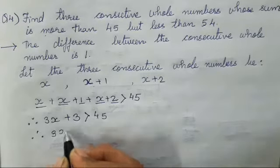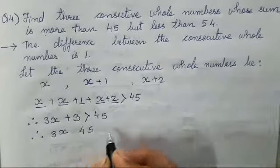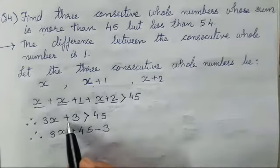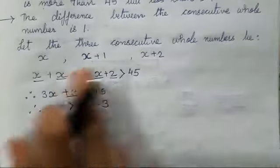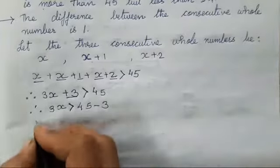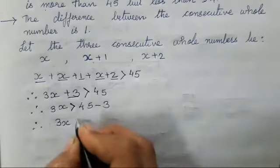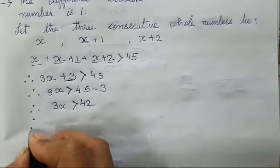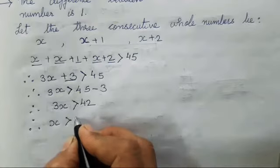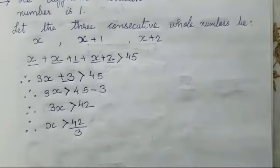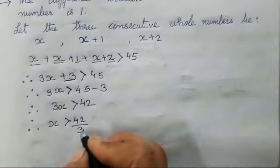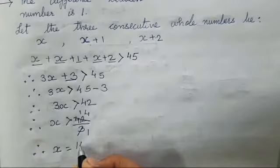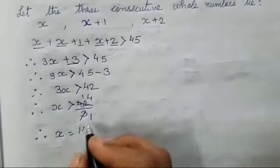Now we have to add the like terms here. 1 plus 2 plus 3. Therefore, 3x plus 3 is greater than 45. This sign was like this because it has already been given whose sum is more than. That is why we are taking the greater and smaller sign to show which side is greater. So now 3x on one side, 45 minus 3.